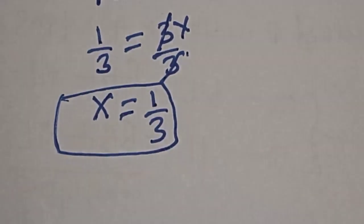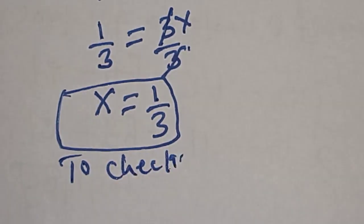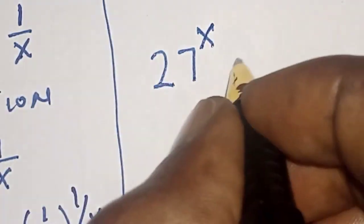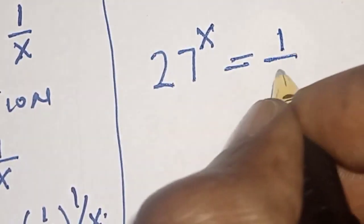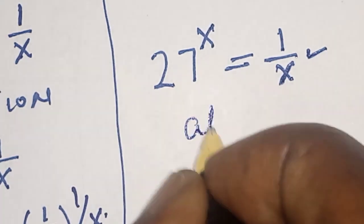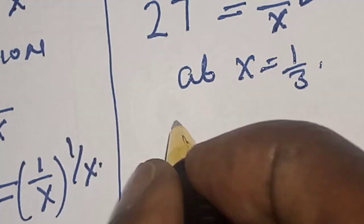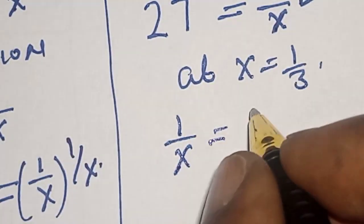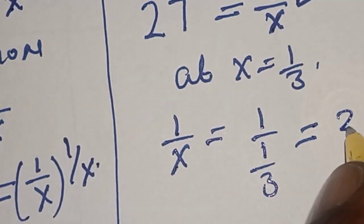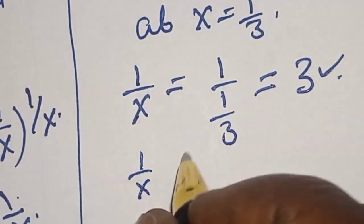We can check to confirm if our answer is right or wrong. To check, we have the equation given: 27 raised to power x is equal to 1 divided by x. At x equal to 1 divided by 3, 1 divided by x is equal to 1 divided by (1 divided by 3), which is equal to 3. Therefore 1 divided by x is equal to 3.